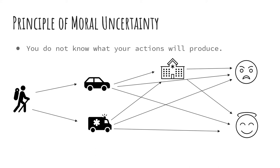One primary argument for deontological ethics comes from the principle of moral uncertainty, which simply says you do not know what your actions are going to produce. For instance, if you went hiking and came across someone in distress, you'd have two choices: carry them to your car and drive them to the hospital, or call an ambulance and wait. There are many different results that could come from either choice.